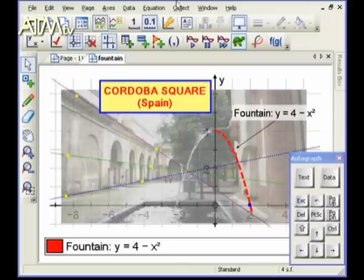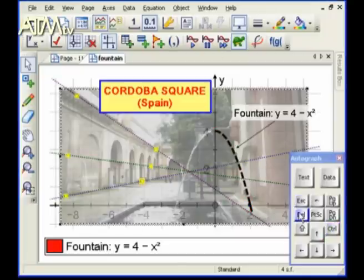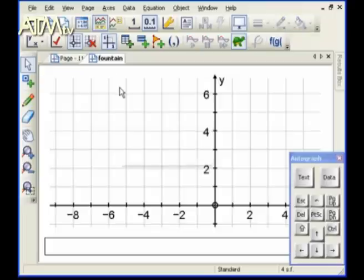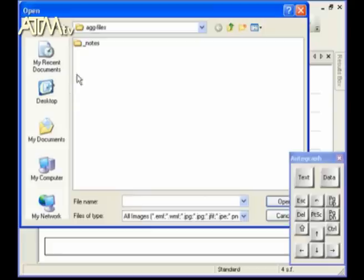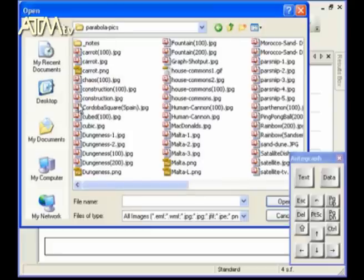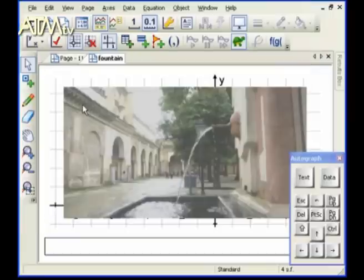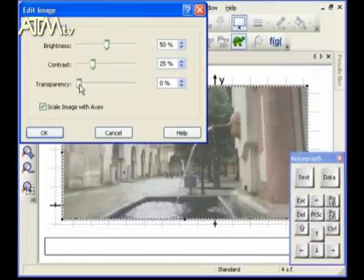So let's just press CTRL and then press the A key and then delete so we can start again from scratch. OK, let's open the image and we need to go to Parabola Pix and Cordoba Square. OK, we'll just double click on that and make it a bit more transparent so we can see the graphs coming through.